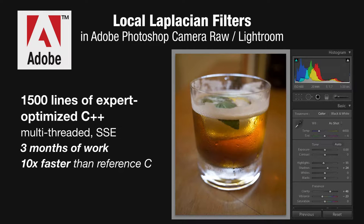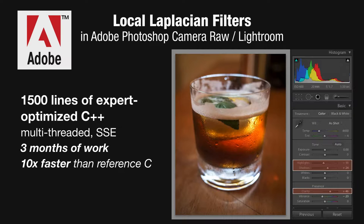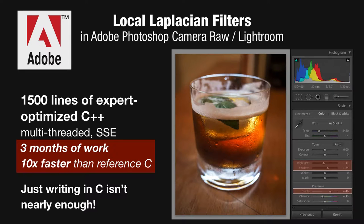To put the challenges of high-performance image processing in concrete perspective: Local Laplacian Filters is a processing pipeline used heavily in Photoshop for HDR tone mapping and the Clarity filter. Adobe's version was written by one of their best developers in about 1,500 lines of optimized C++, manually multi-threaded and hand-coded for SSE, and it took them about three months to implement and optimize. All that manual effort matters — the optimized version is 10 times faster than a reference version in about 300 lines of C++. So just porting your MATLAB code to C, while it can feel like a big speed-up, usually isn't nearly enough to approach peak performance on a modern machine — it can easily be an order of magnitude still behind peak.